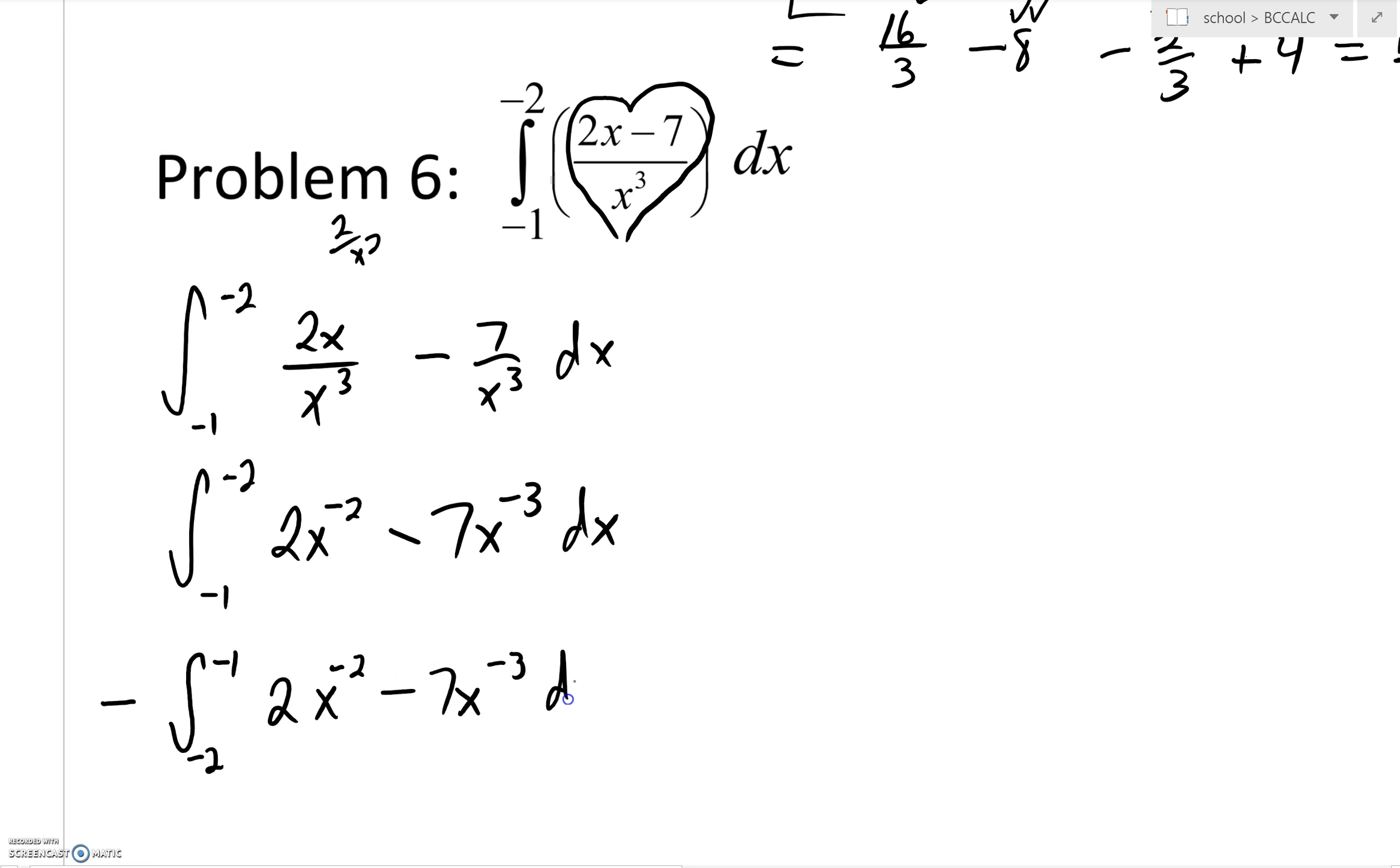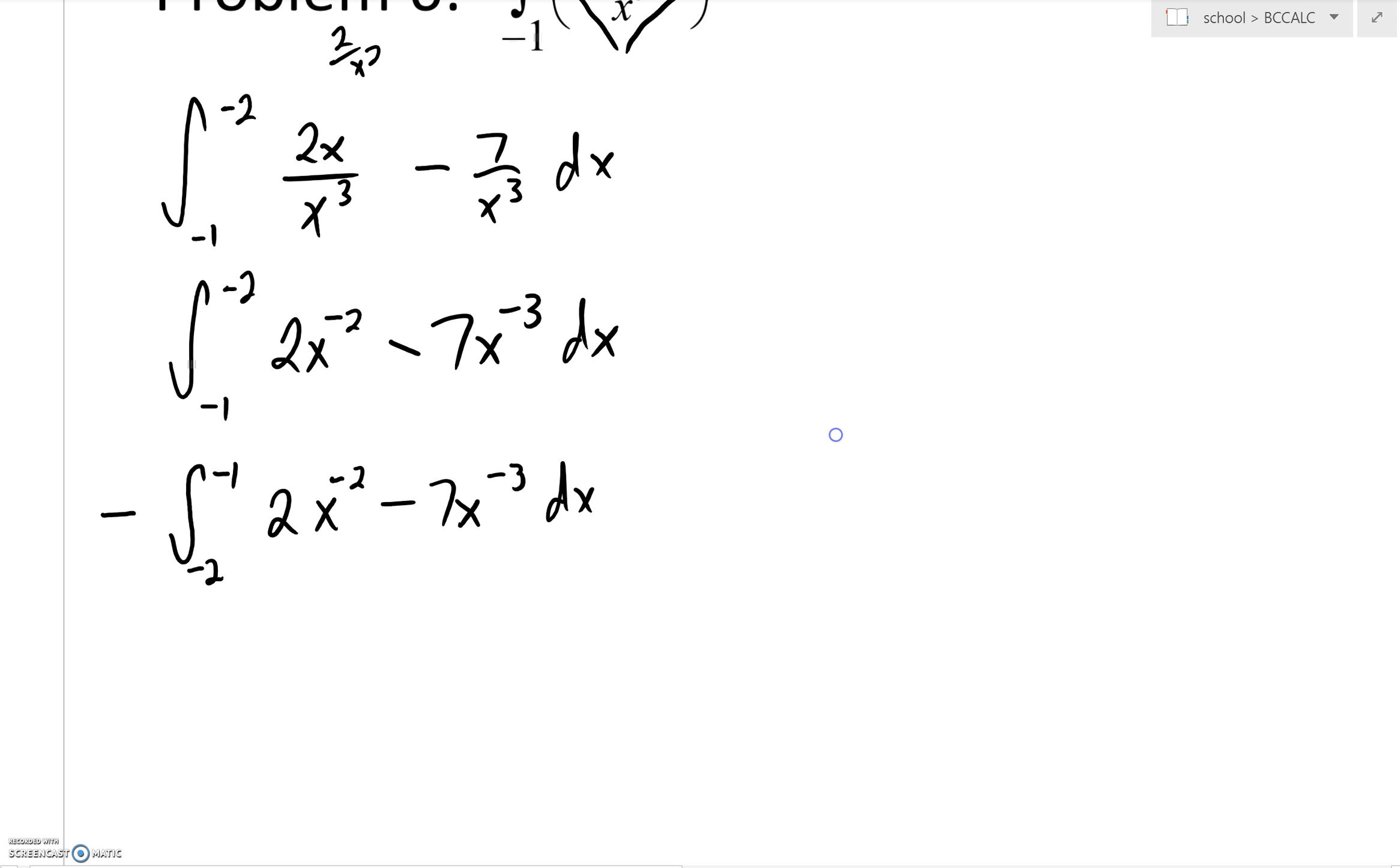And we can fix this up very fast. So now we just go ahead and we take our antiderivative. And our antiderivative, we're going to bump this up a power of 1. So we'll have x to the negative 1. But then we have to divide by that negative 1. So that's going to become a negative 2. Here we're going to bump this up by a power of 1. And that's going to be x to the negative 2.